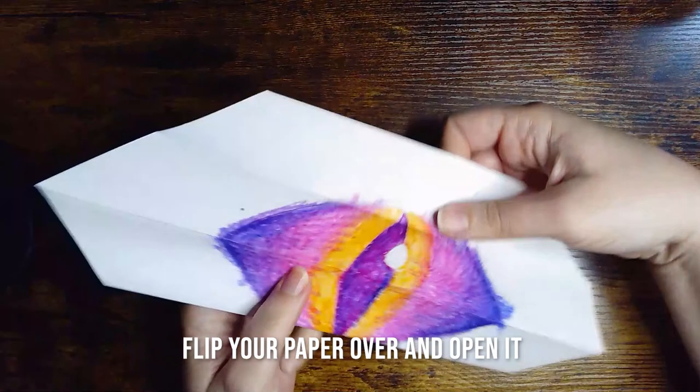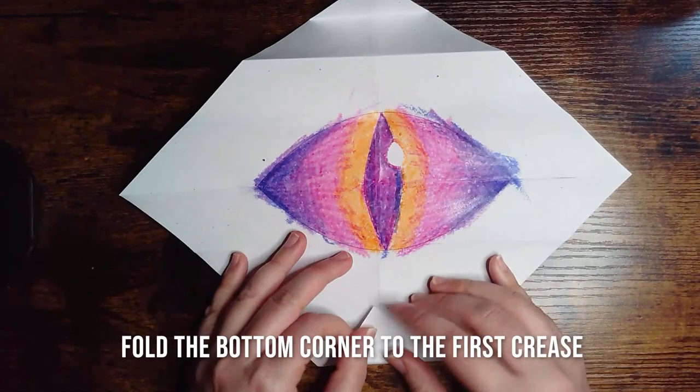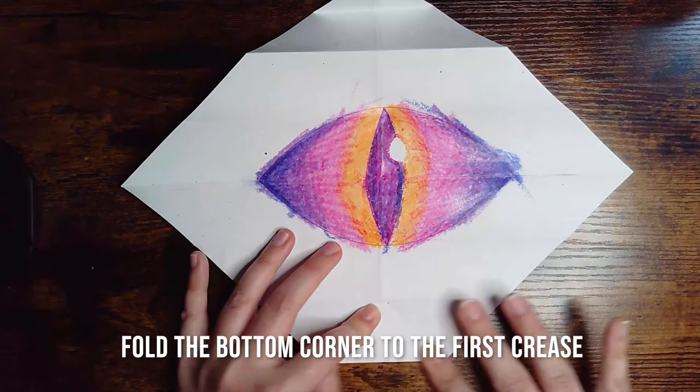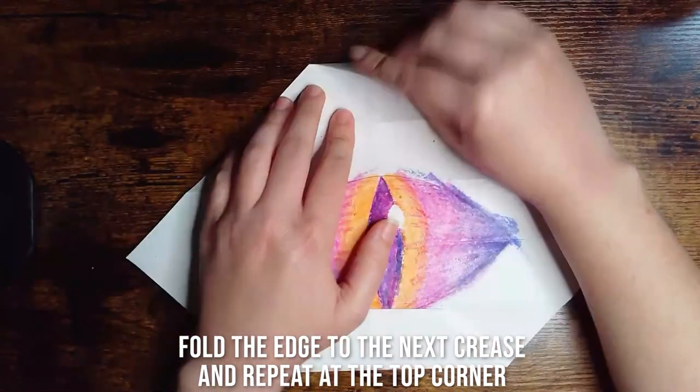Next, you're going to flip your paper over and open it. And then you're going to fold that bottom corner to the first crease, fold it over to the next crease, and then repeat at the top corner.